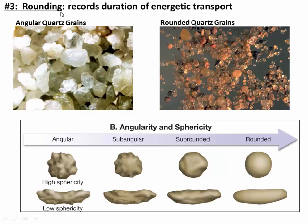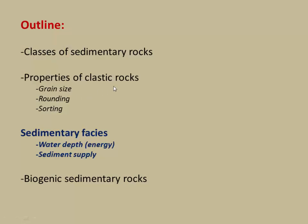The third property of clastic rocks is rounding of sediment grains, which records the duration of energetic transport. As grains get worked over by waves or river water, they grind against each other and become rounded — the longer they're in an energetic transport system, the more rounded they become. Rounded quartz grains have probably sat on a beach for thousands of years being washed back and forth by wave energy, whereas angular grains might be freshly derived from a crushed rock. That wraps up the three properties: grain size, rounding, and sorting.